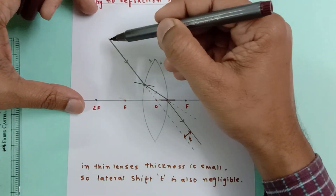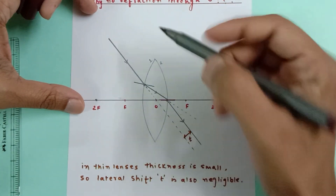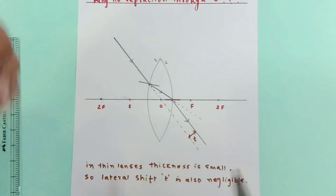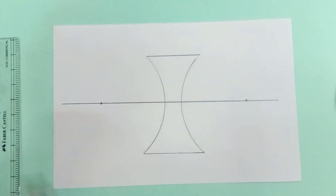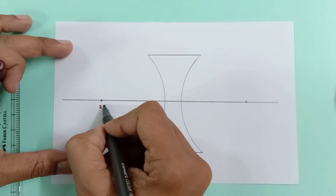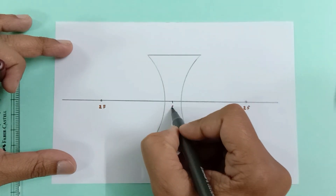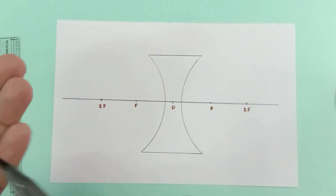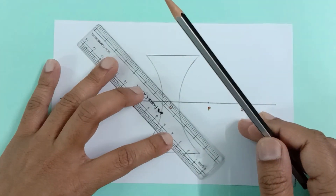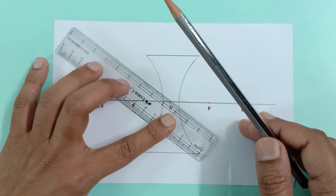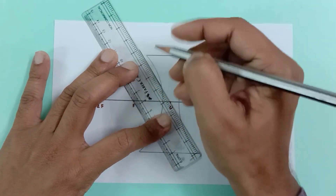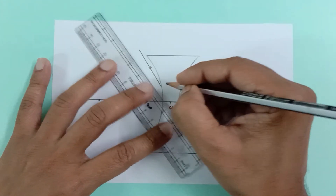This lateral shift can be ignored, so that's why we continue to draw this ray in a straight line — because the thickness is very small. Even if you don't consider the refraction effects, it's fine; the ray would continue to move in a straight line. Now let's do the same for a concave lens. Here I have a concave lens with 2f marked on both sides, O at center, and the focus at the midpoint.